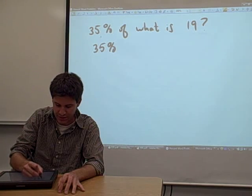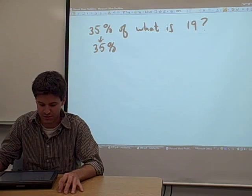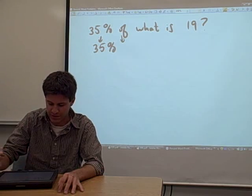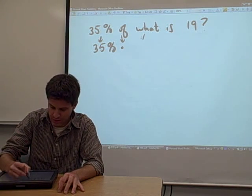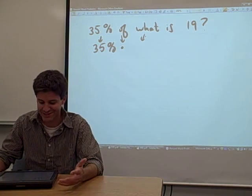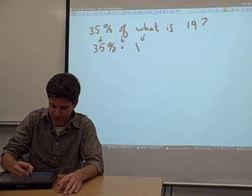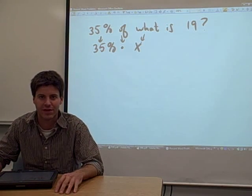So 35% is already something mathematical, so we don't have to convert it. Of is typically associated with multiplication. What is what we're trying to solve for. We don't know what it is, so we're going to call it x and solve for that later.